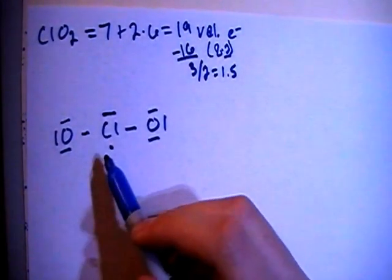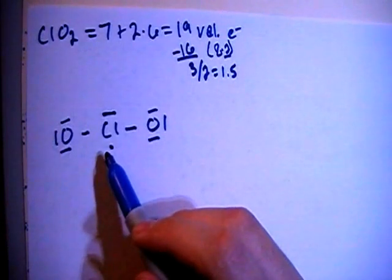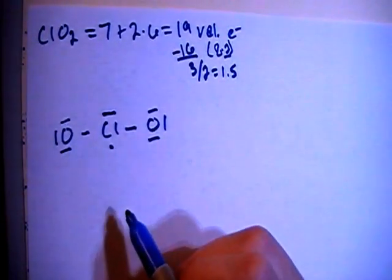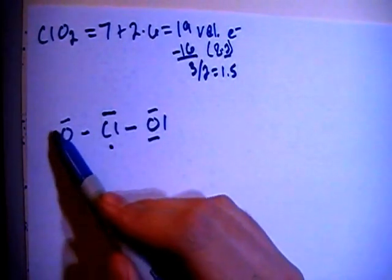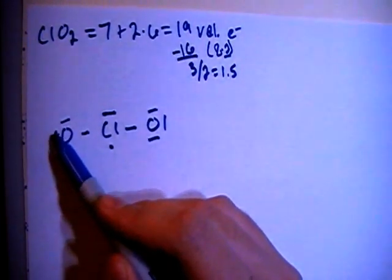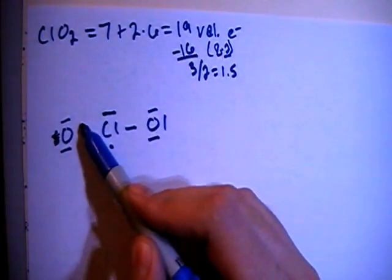So if you were to check the formal charges right now, you would have some really high numbers, which you don't want. You want to have as close to 0 as possible. So what we're going to end up doing is moving this non-bonding pair on this oxygen to make a double bond.